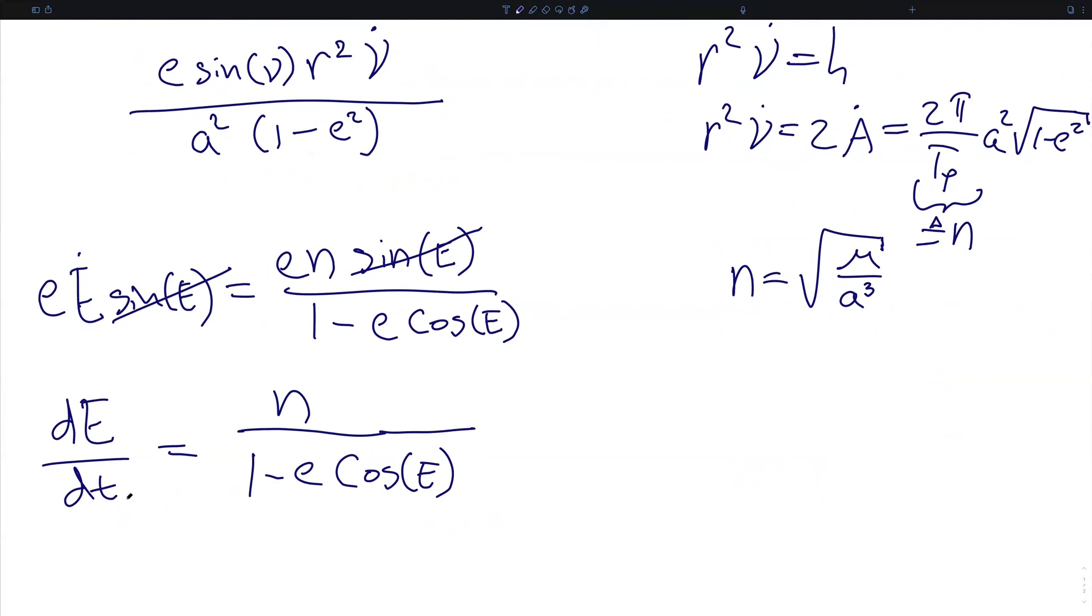We can integrate this with respect to time, and we get the eccentric anomaly minus the eccentricity times the sine of the eccentric anomaly is equal to the mean motion times time minus a new quantity t_p, which is the constant of integration that we get because we've just done an indefinite integral. And we take this whole term and we define this as a new quantity, which is M, the mean anomaly.